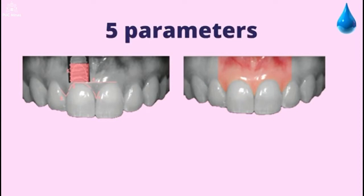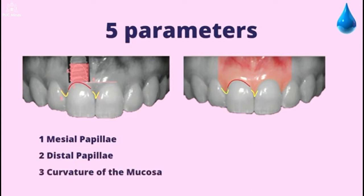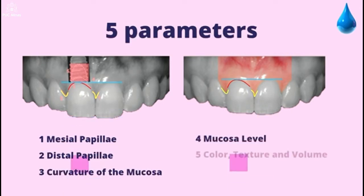Within the gingival parameters of the pink aesthetic index, we have five variables: one, mesial papilla; two, distal papilla; three, mucosa curvature; four, mucosa level; five, color, texture, and volume.